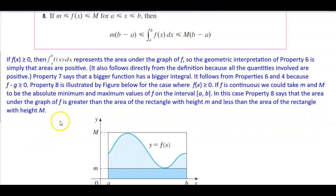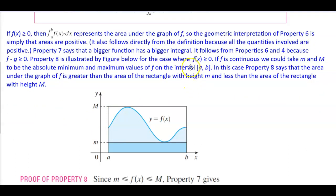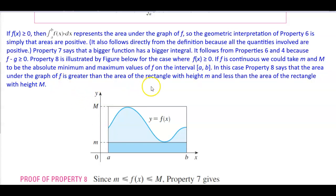Property 8 is illustrated by the figure below for the case where f(x) is greater than or equal to 0. If f is continuous, we could take m, located here, and capital M to be the absolute minimum and maximum values of that function. Here's the minimum and here's the maximum on the interval from a to b. In this case, property 8 says that the area under the graph of f is greater than the area of the rectangle with height m and less than the area of the rectangle with height capital M.